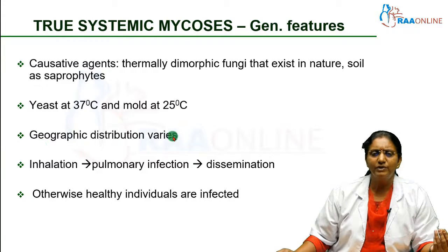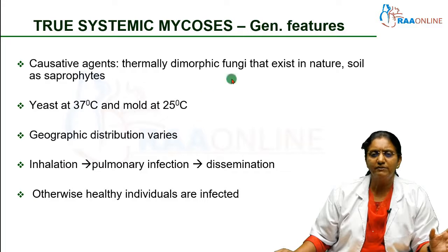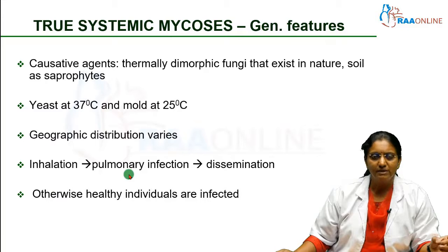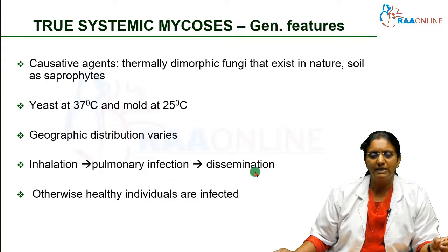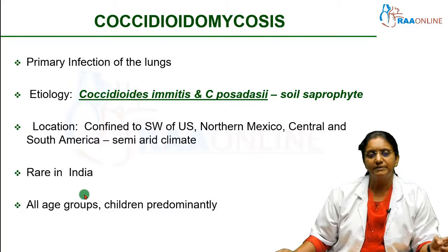The geographic distribution varies. They are all endemic to different areas in the world. For most of these infections, we inhale the spores of these fungi. It goes to the lungs, sets up an infection there, and then can spread to the other parts of the body. Sometimes even normal healthy individuals can get affected.